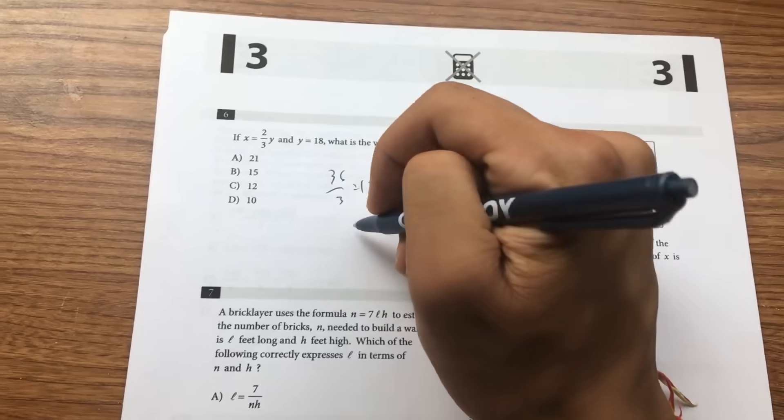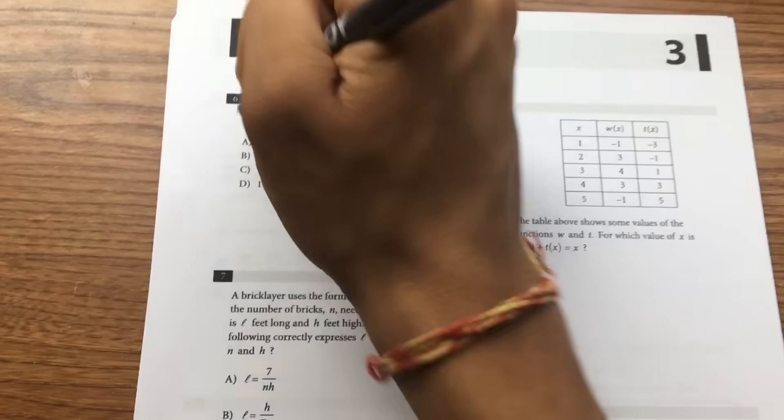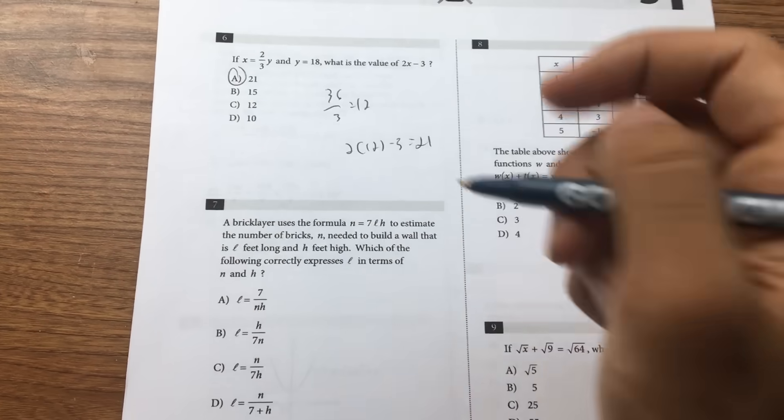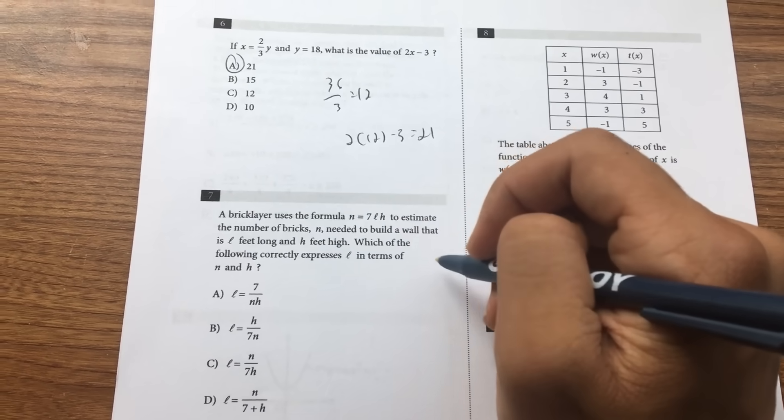Number 7, it's just rewriting the equation in terms of L. So divide by 7h, so n over 7h is equal to L.